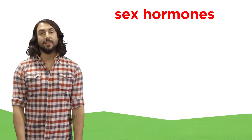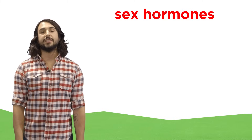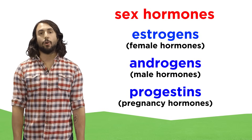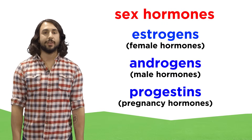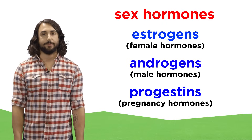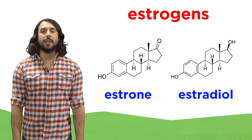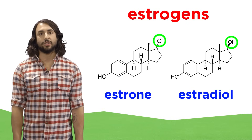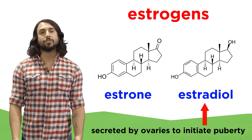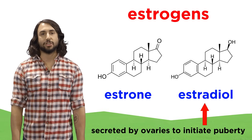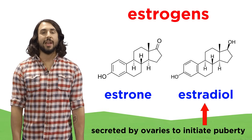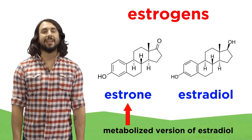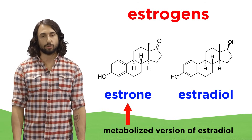Let's look at another type of steroid: the sex hormones. These can be divided into three classes — the female hormones or estrogens, the male hormones or androgens, and pregnancy hormones or progestins. Let's look at the female hormones first. These are estrone and estradiol, which differ only in the level of oxidation at carbon 17. Estradiol is secreted by the ovaries and kicks off the changes that occur during puberty and also causes development of the mammary glands during pregnancy, whereas estrone is just a metabolized form of estradiol that is excreted.